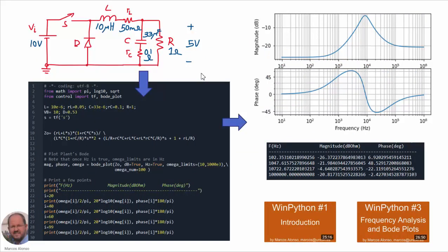Now we are going to calculate the output impedance of our DC-DC converter theoretically. We are using the same converter as in previous videos. Here we have a WinPython script to represent the Bode diagram of the output impedance, including the expression, the plotting, and printing of several reference points at different frequencies to check against simulation results. If you are not familiar with WinPython, please take a look at the introductory videos about WinPython and how to do frequency analysis and obtain Bode plots.